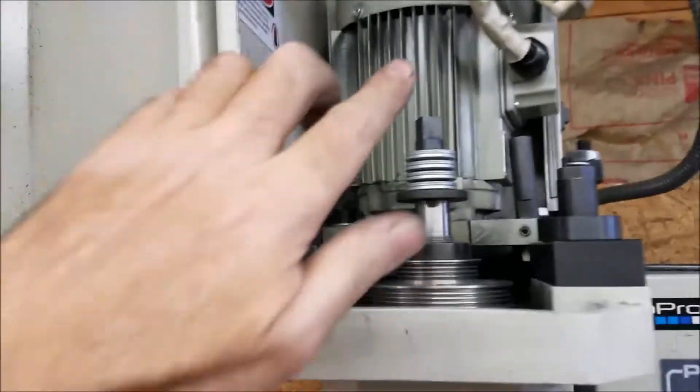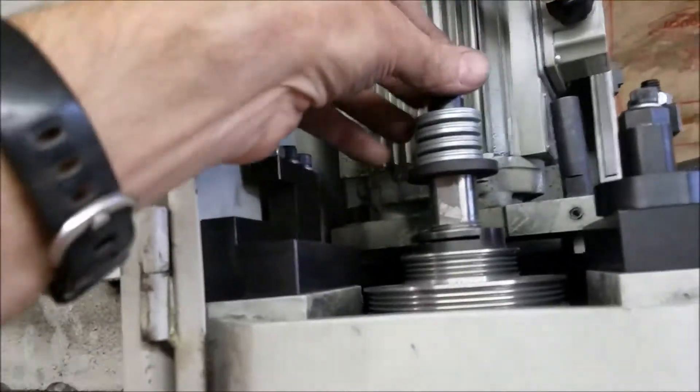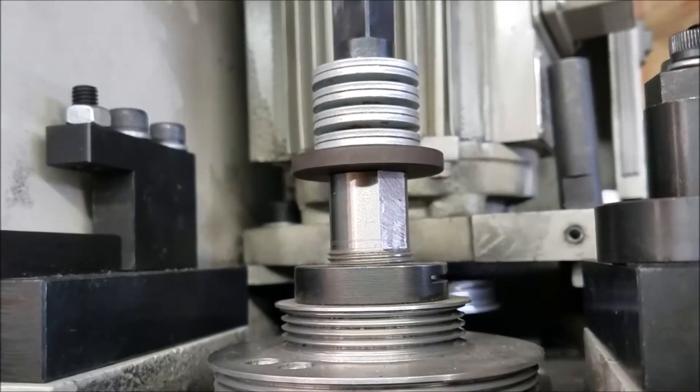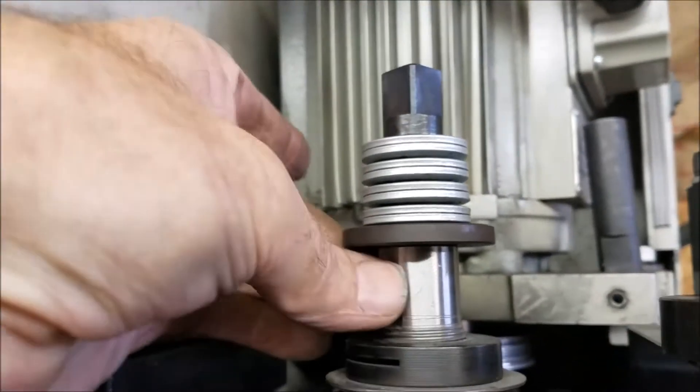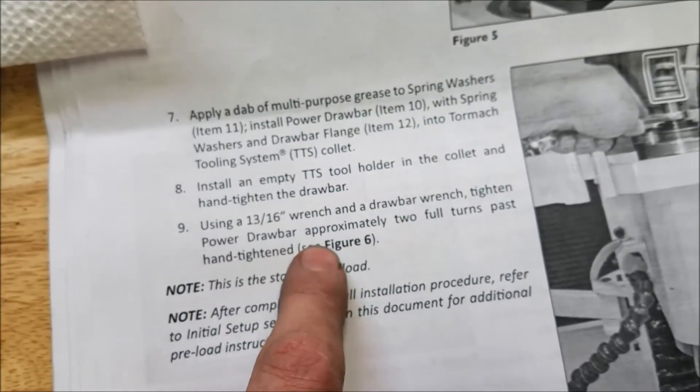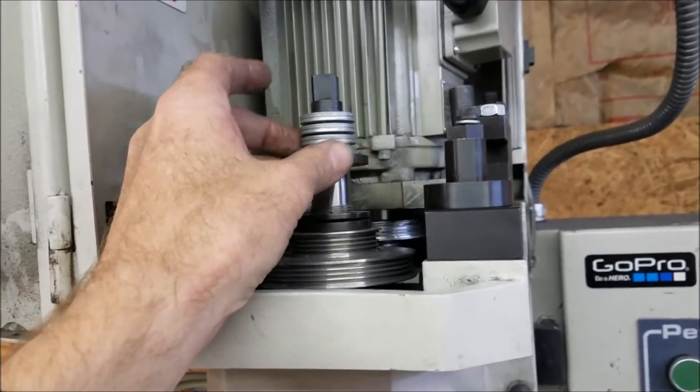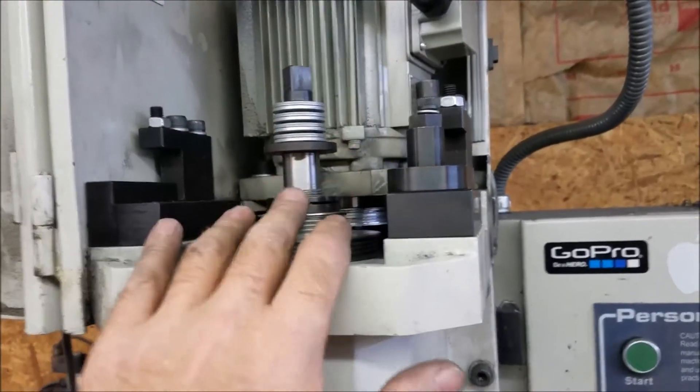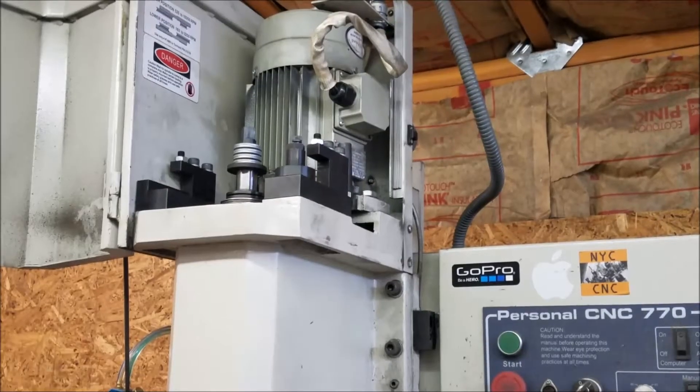I've installed the power drawbar with the collet down below. Put the collet in first, slid this down in. You can see what it looks like up close there. Now I'm supposed to tighten this down with two wrenches—here and here—to a specific, let me see what it says, two full turns past hand tight. I hand tightened this and then turned it two full turns. That's what's referred to as pre-loading, and after the installation is done then it will be adjusted to the proper tightness.